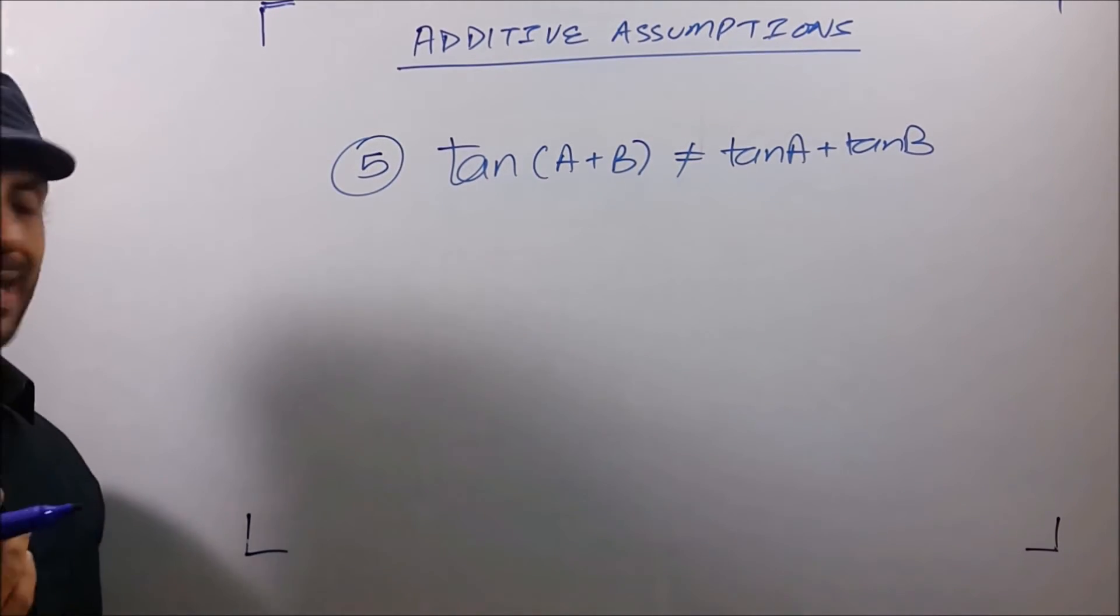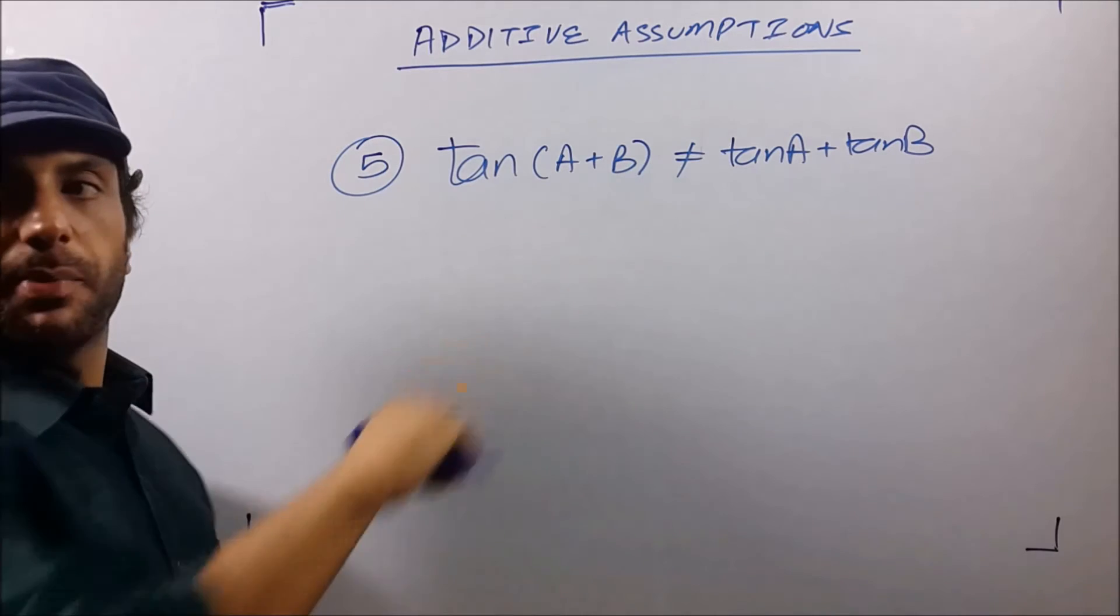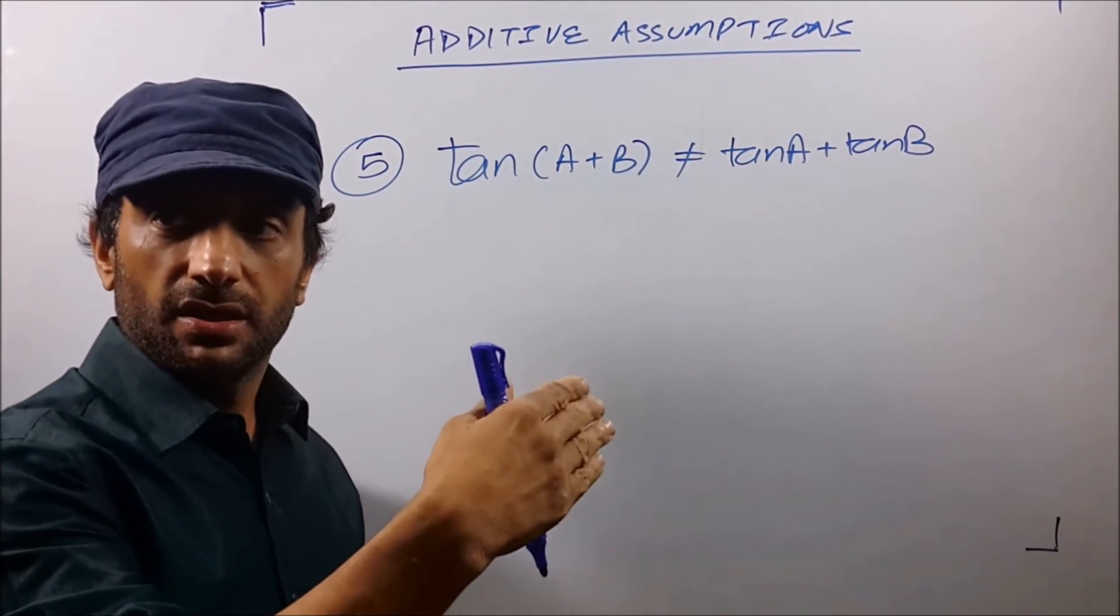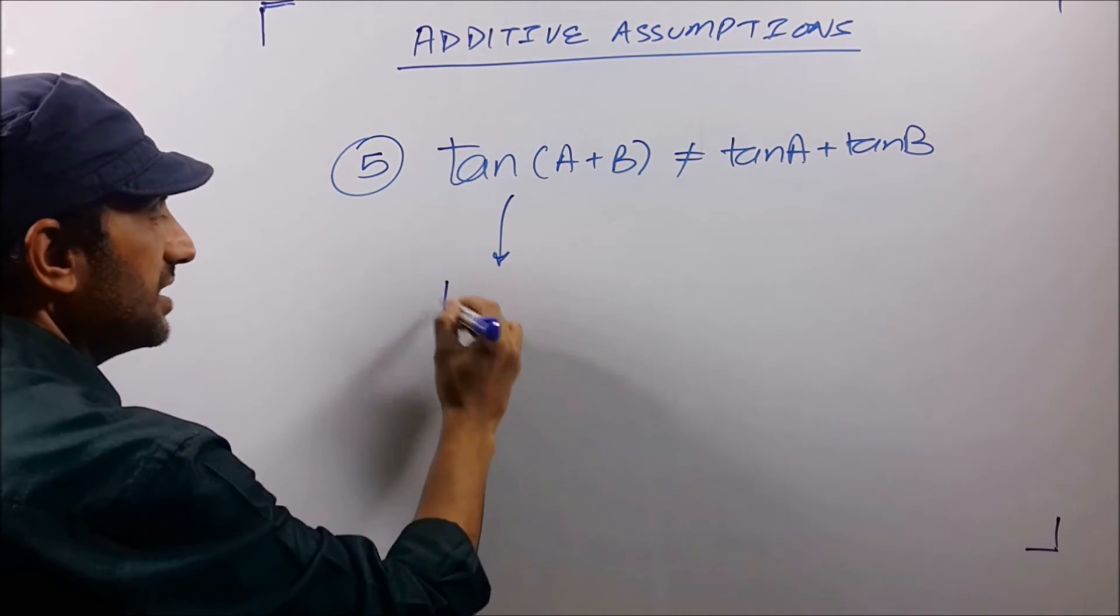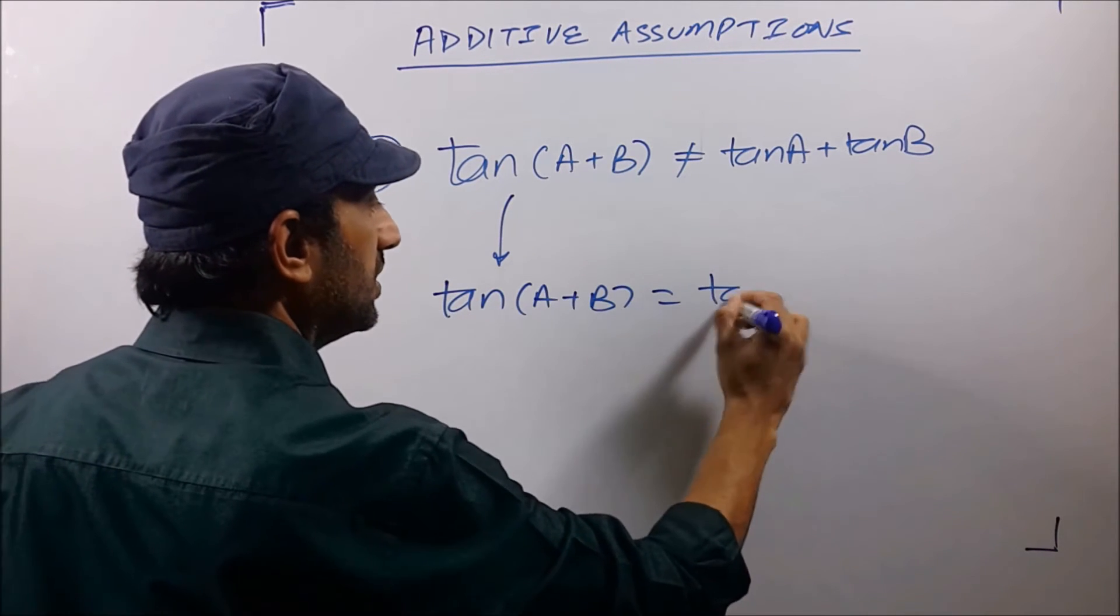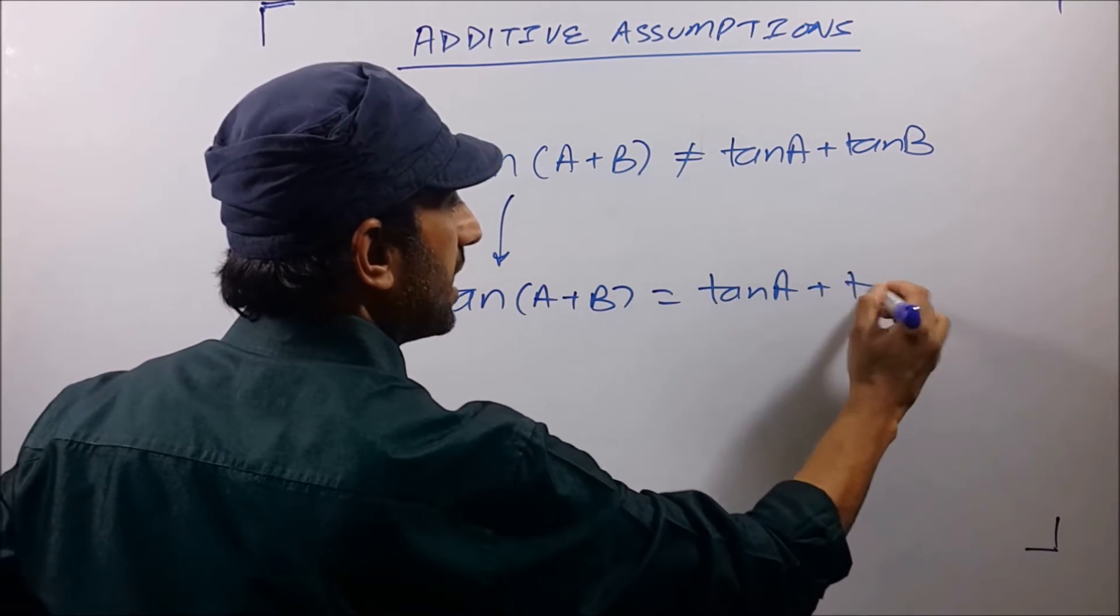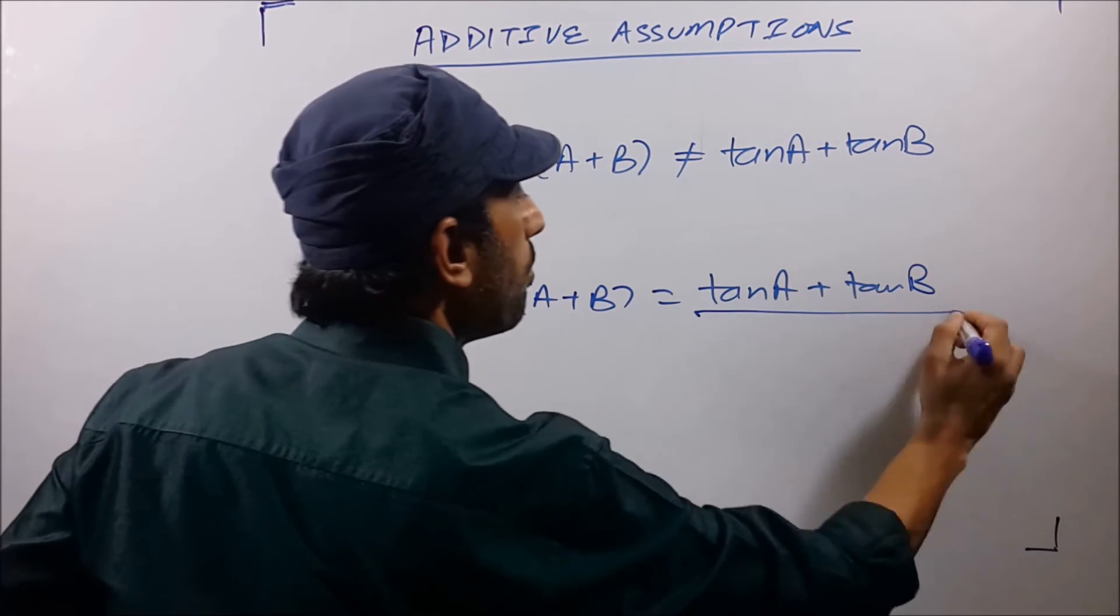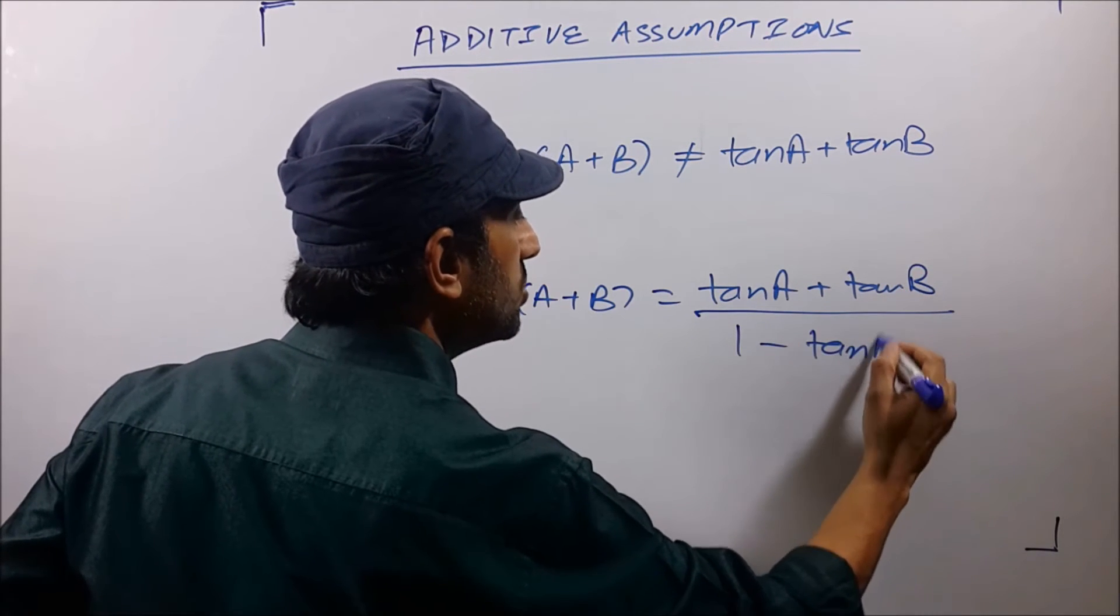Many people do this mistake and they simply open the bracket in trigonometry. Left hand side is a big formula. tan(a+b) = [tan(a) + tan(b)]/[1 - tan(a)·tan(b)].